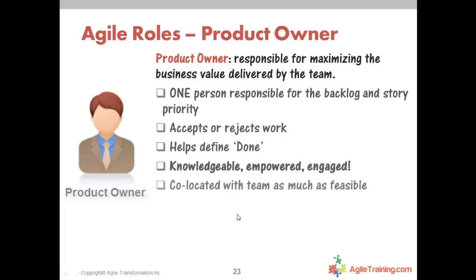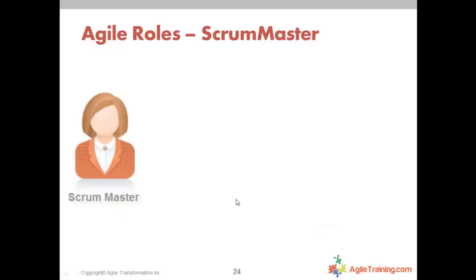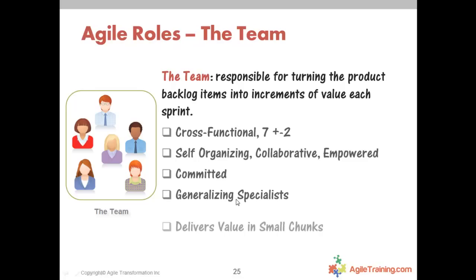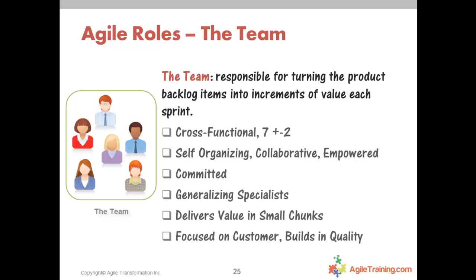When you download the slides you'll get more detail on each role. Teams shouldn't be large — seven plus or minus two is ideal. Once a team gets to 15 people, they'll create mini silos and won't perform as a high-performing team. We want teams of generalizing specialists — it's not about 'my task' or 'your task,' it's about getting the story to done.